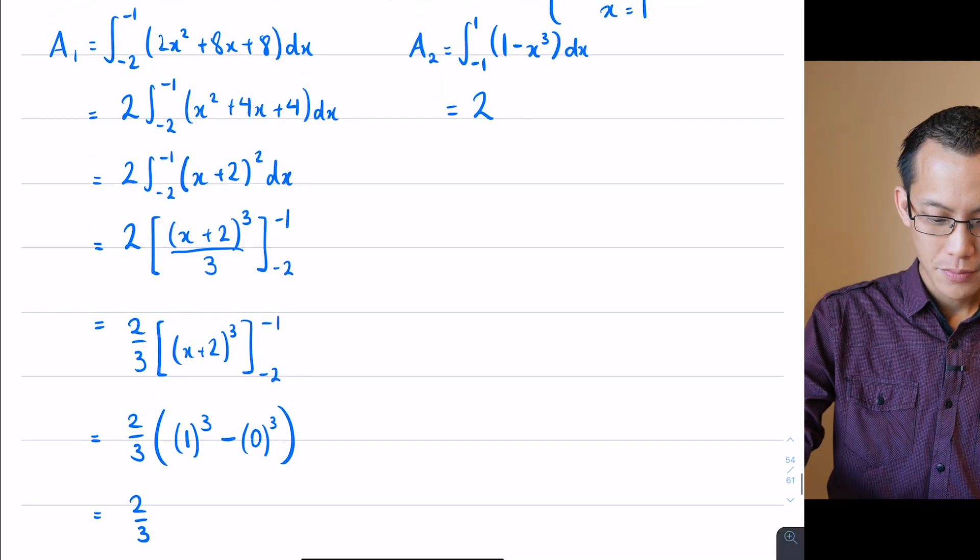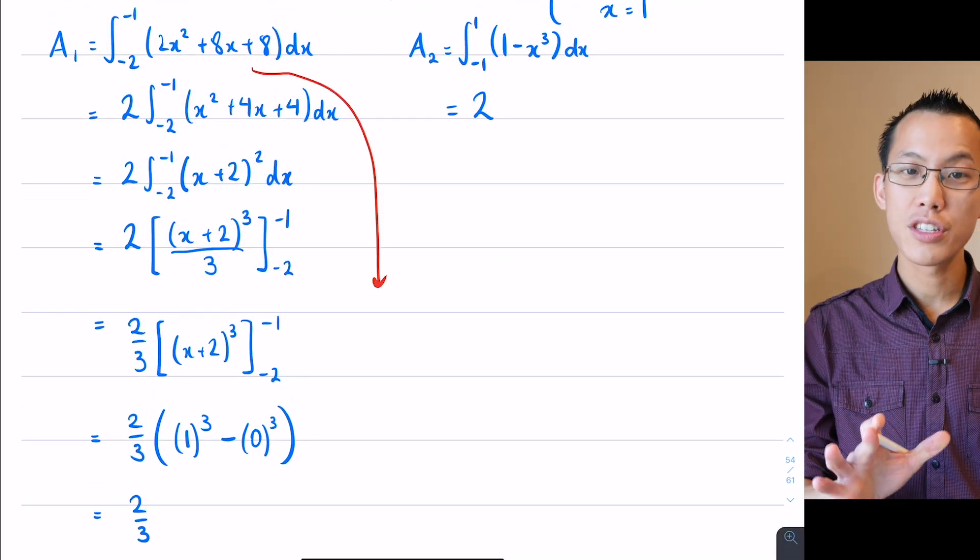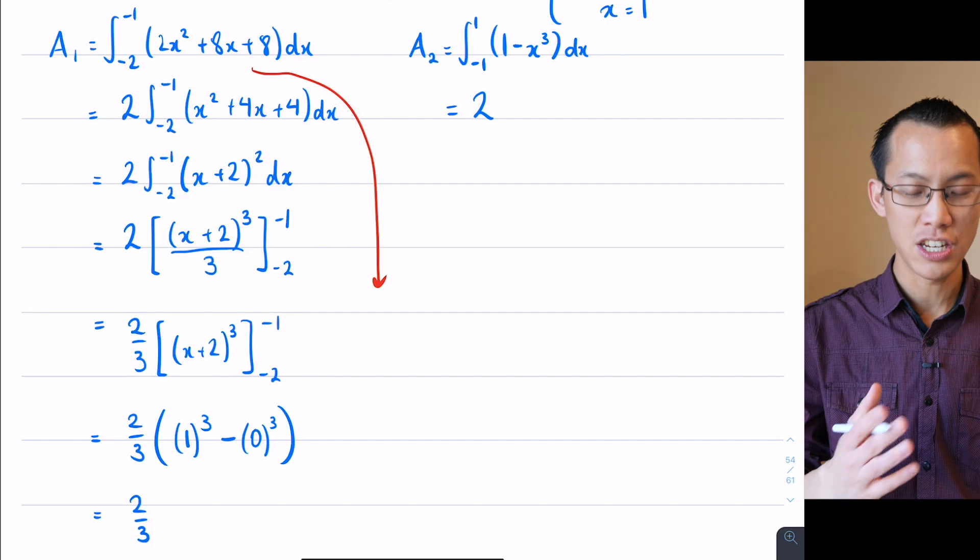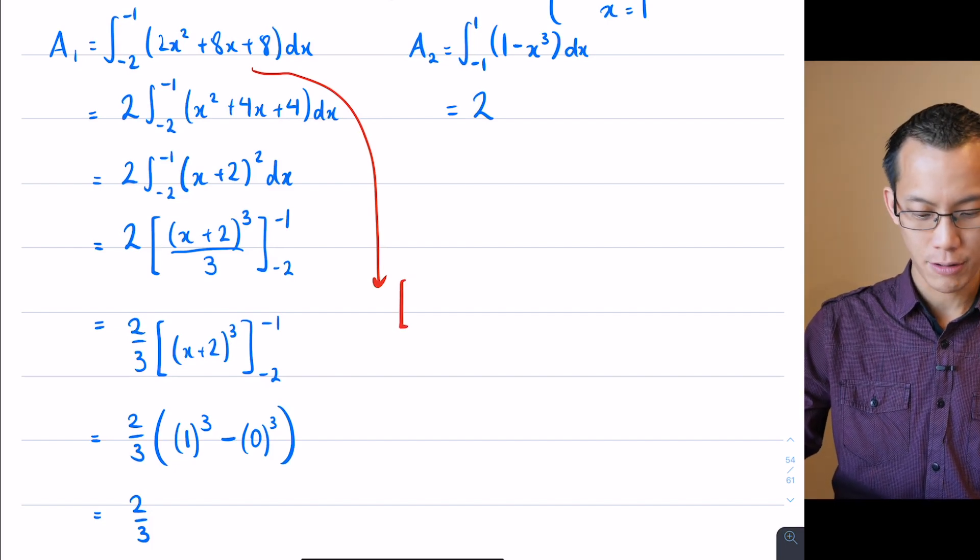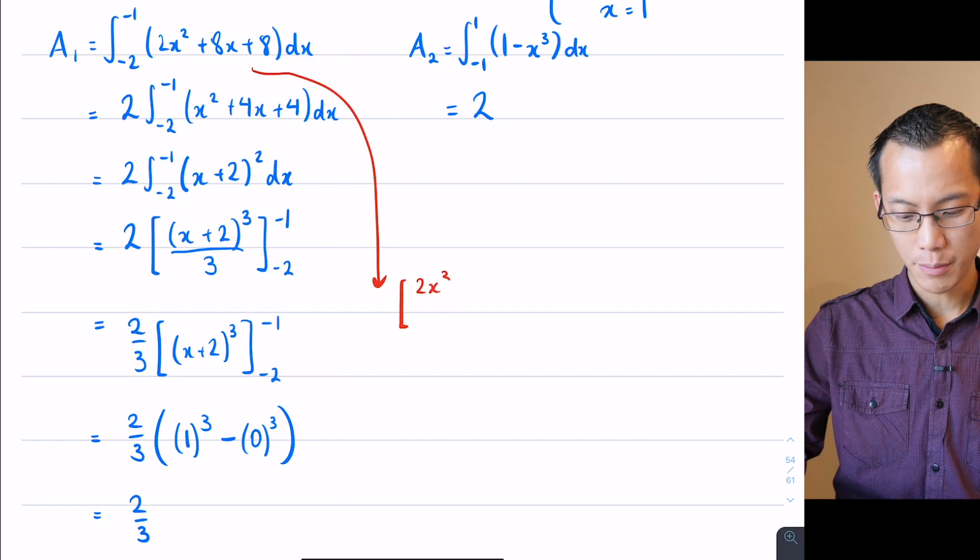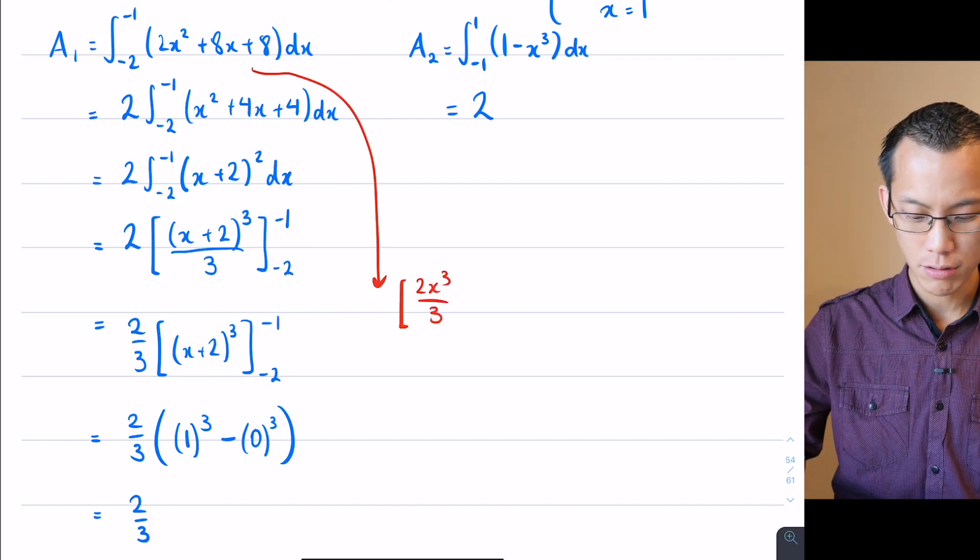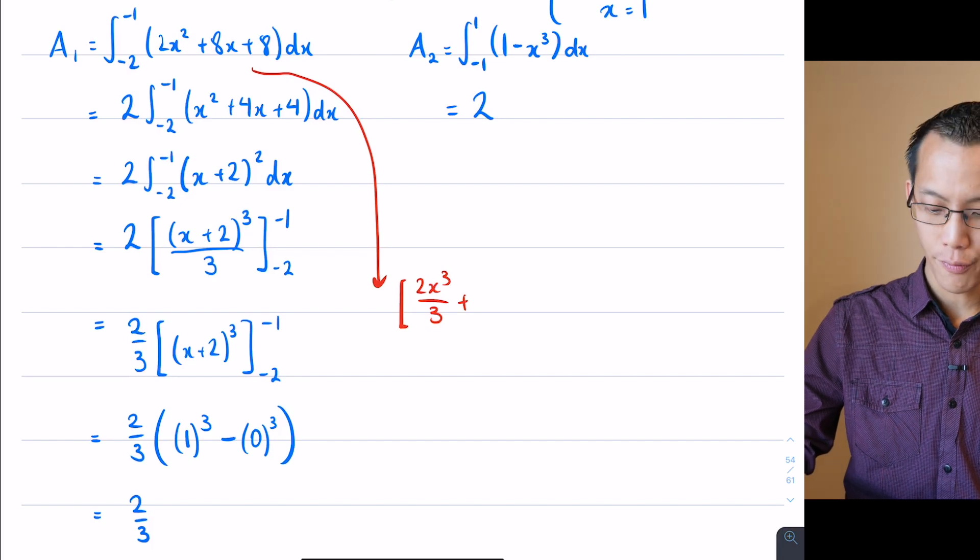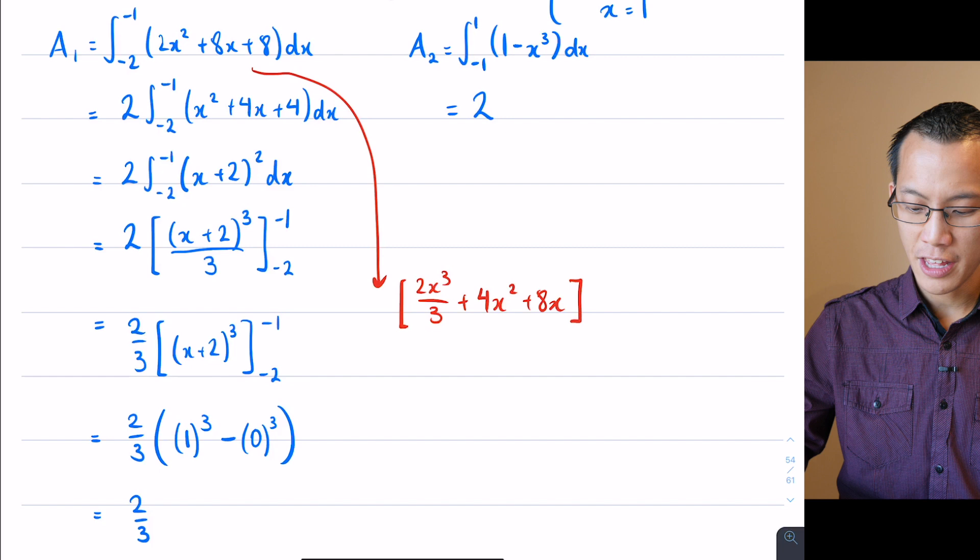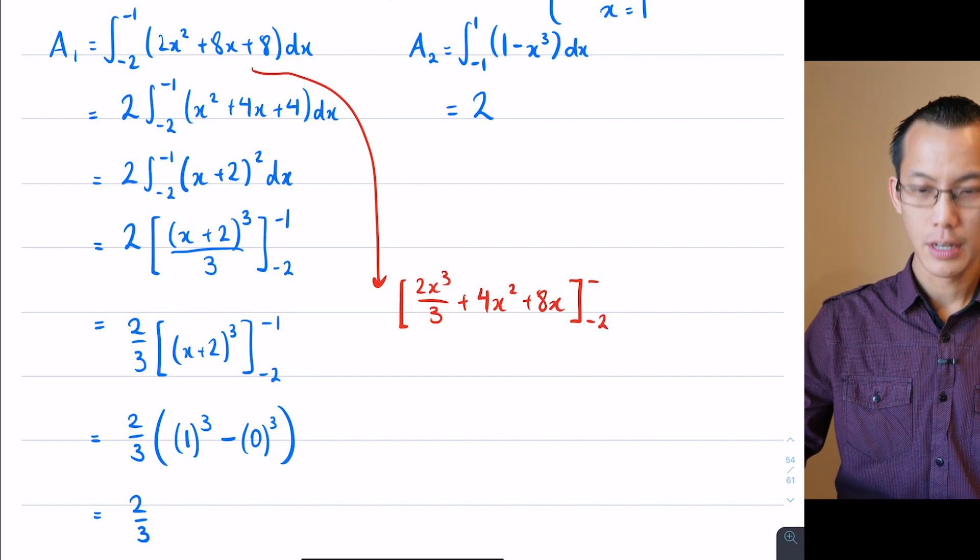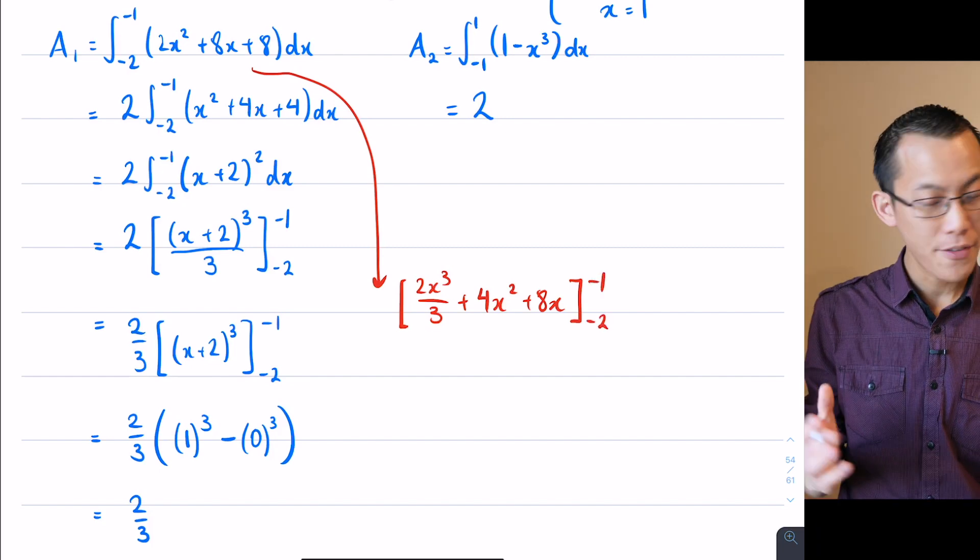So I guess if you wanted, you know if I had gone back to this step right up here, let's just suppose I didn't do any of that simplification, didn't use reverse chain rule. What is this thing going to look like? Well I'm going to be integrating, this is what I started doing before I stopped myself: 2x³/3 + 8x²/4 will be 4x² + 8x and then I'm going to be doing that from -2 to -1.